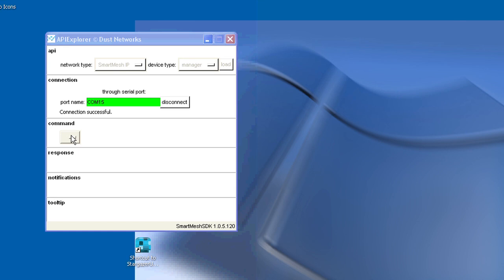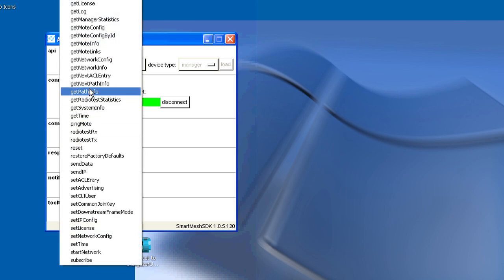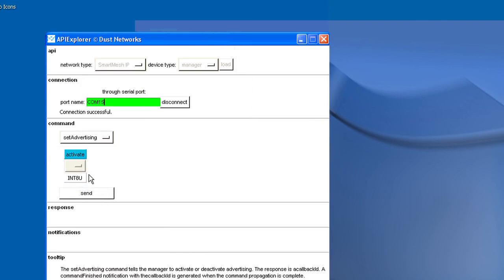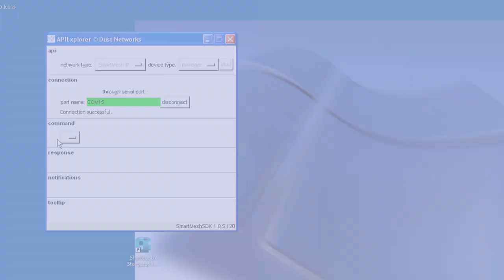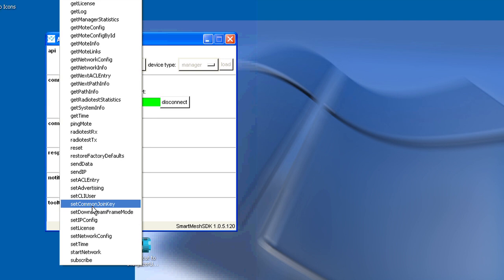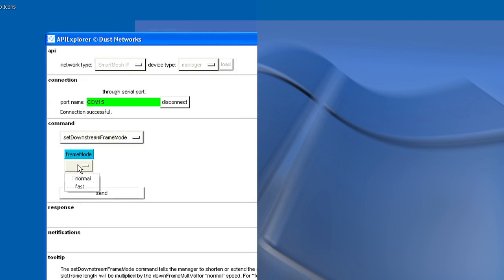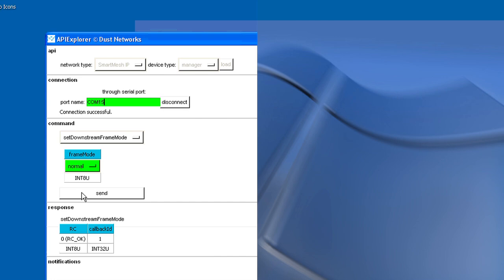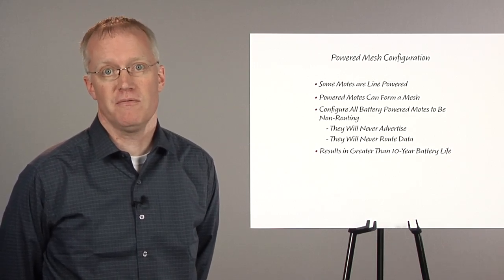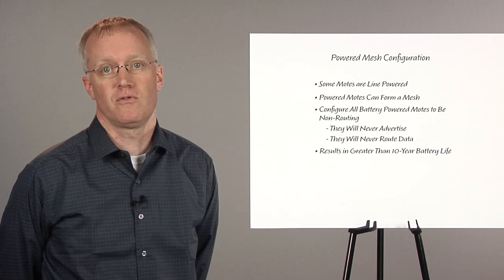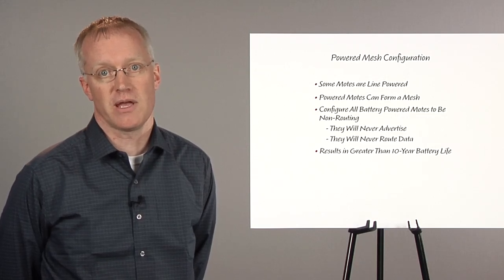You can make these changes and measure them on a real network by using API Explorer. Here's the command to turn off advertising. Be careful, because when advertising is off, no new motes can join. If you want a new mote to join, or if a mote gets lost, your host application should turn advertising back on. Here's the command where I turn the downstream frame mode from fast to normal. The result is that when in this mode, the speed of downstream communication slows down. If you want to speed things back up, you can turn that downstream bandwidth back on by returning the frame mode to fast. It takes a few minutes to switch back and forth, so this is not something your host application can do frequently.